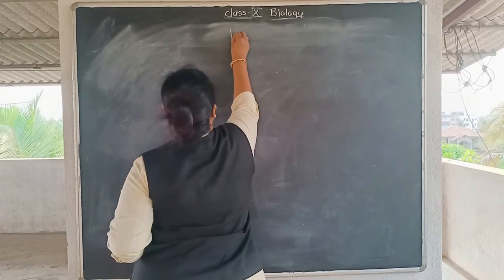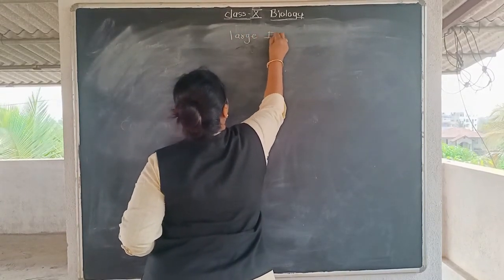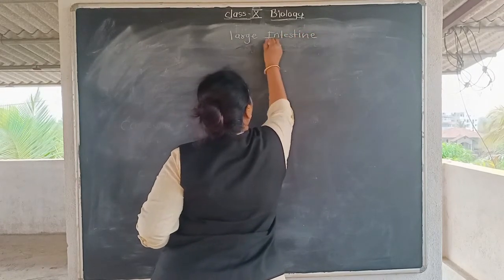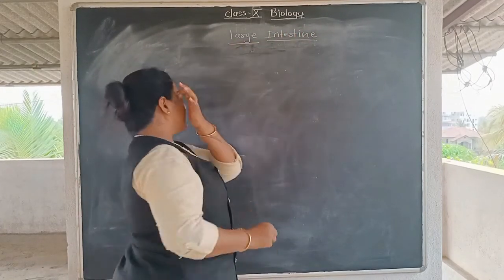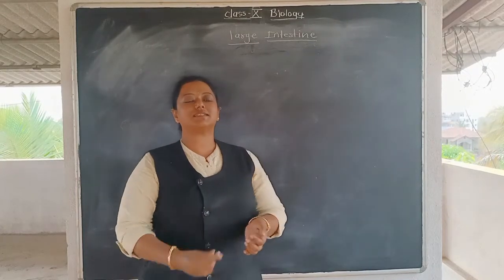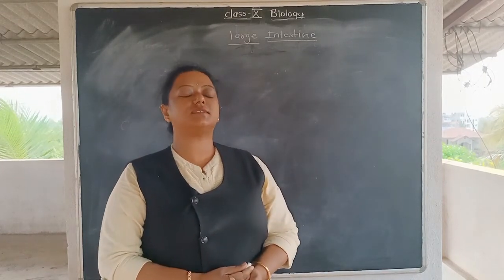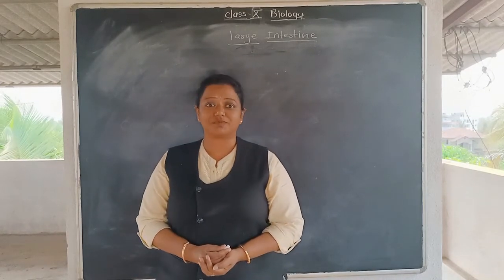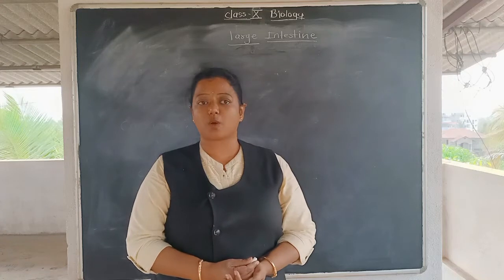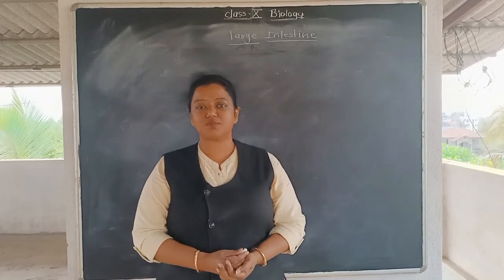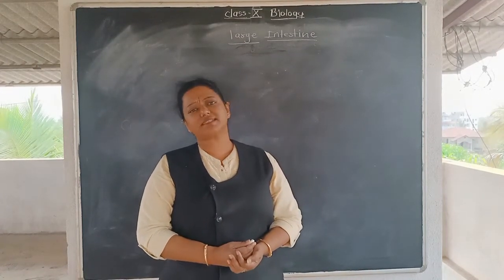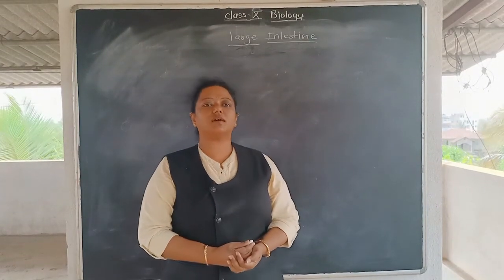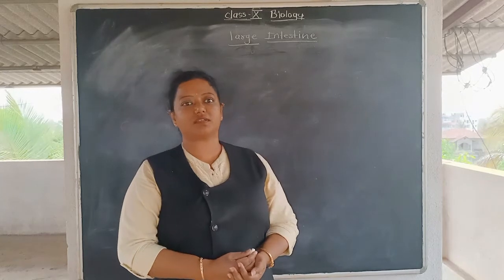We are looking at the large intestine today. No digestion takes place in the large intestine — whatever digestion and absorption was to be completed has already been done in the small intestine. So what exactly happens in the large intestine? There is one important term: excretion and defecation.